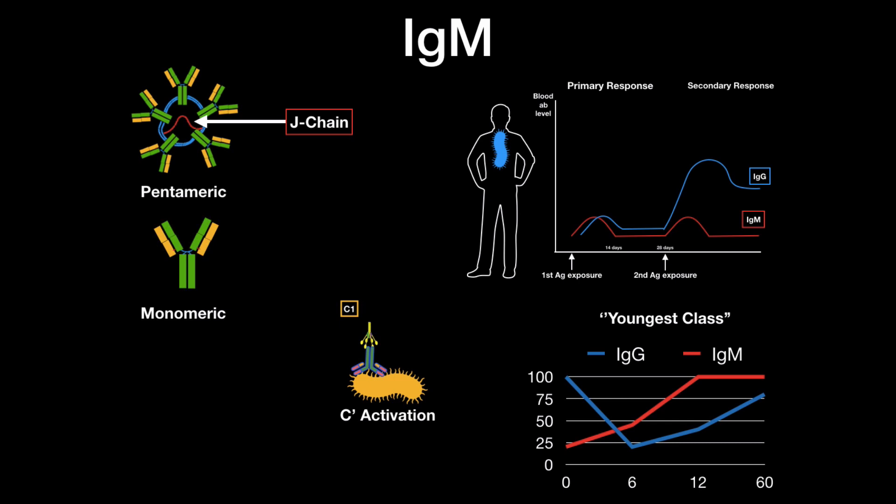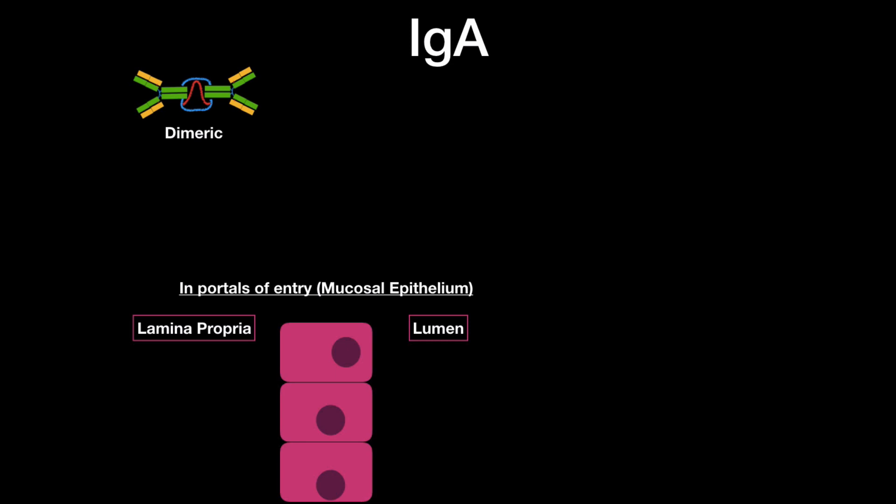Next, IgA. IgA are found dimeric, also with a J-chain. And it's mostly found at the portals of entry. So this is the mucosal epithelium right here. On the left, there's the lamina propria and the lumen to the right. So I hope you kind of get a sort of an image of what we're looking at right now. I'm really bad at animating things.